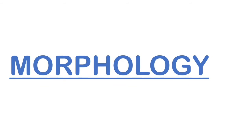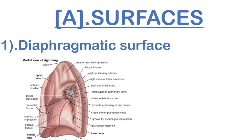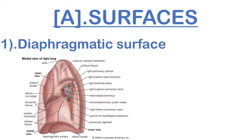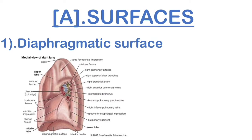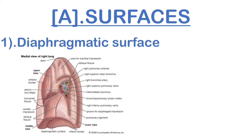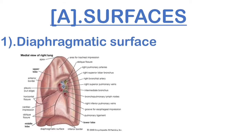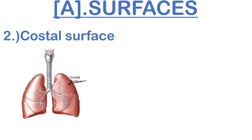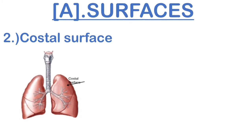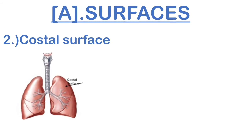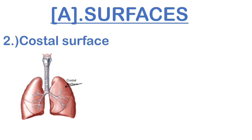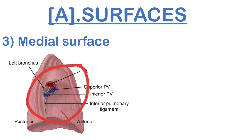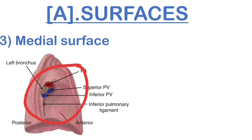Let's start with the morphological part. We will describe the surfaces, the lobes, the segments, the functions, the holotopy, and the skelotopy. First, the surfaces. The lungs have three surfaces: the first is the diaphragmatic surface, because it is near the diaphragm; the second is the costal surface, because it is present near the ribs of our body; the third is the medial surface, because it is present medially in our body.